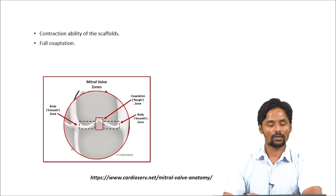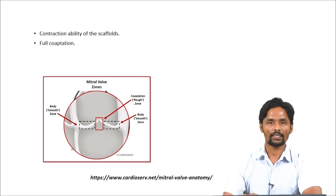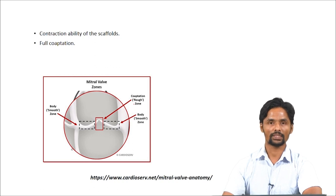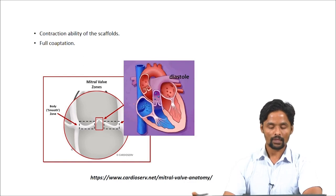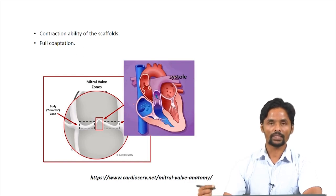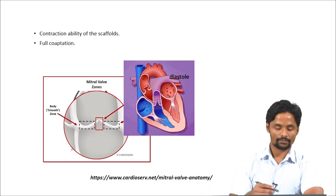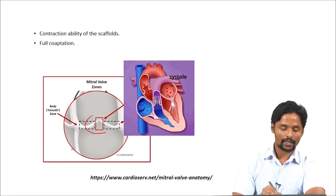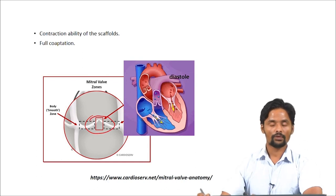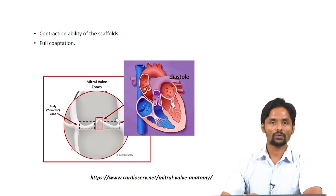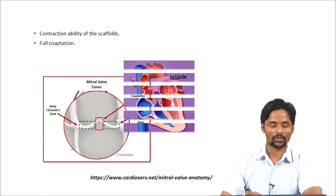Another challenge is the contraction ability of scaffolds. As we know, the heart is highly contractile in nature, and producing a scaffold which has contracting ability is one of the challenges in heart tissue engineering. Another challenge is full cooperation — as we know, the heart is made up of valves which ensure blood flows in the right direction. These valves are able to contract and relax, and producing such valves that can contract and relax is a challenge in heart tissue engineering.